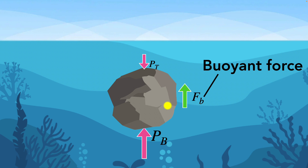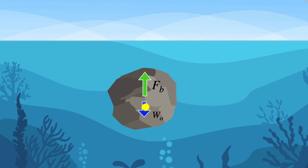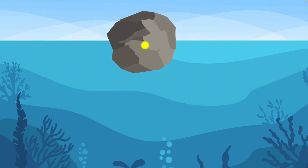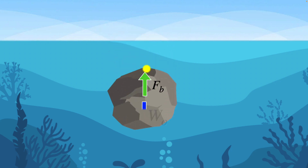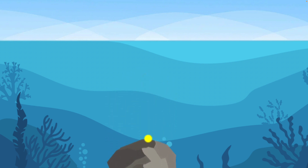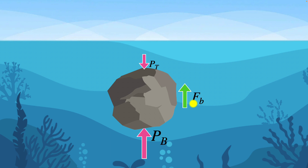Now comes the big question: because of this buoyant force, how do we know whether an object is going to float or sink? It depends upon the weight of the object. If the weight is smaller than the buoyant force, the buoyant force wins, the net force will be upwards, and the object will accelerate upwards — making it float. On the other hand, if the weight of the object is larger than the buoyant force, then the weight wins and the object will accelerate down — in other words, it will sink. So all we need to do is figure out what the buoyant force is, especially when objects have irregular shapes.